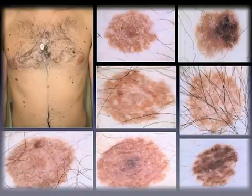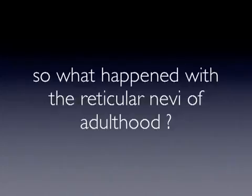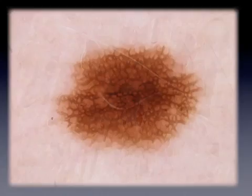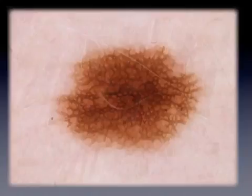In podcast number 3, we also learned that most nevi in adults reveal a reticular pattern. In fact, nevus counts in adults are high and most nevi will show a reticular pattern. So what happened with the reticular nevi of adulthood in the elderly? It seems that reticular nevi fade away, undergo involution, and therefore disappear throughout lifetime.